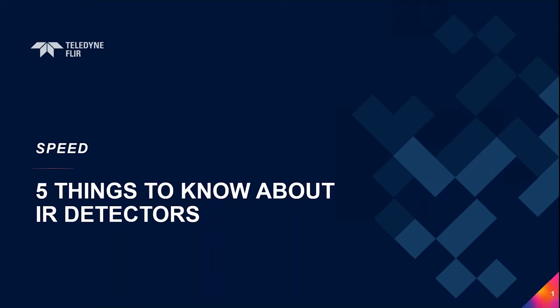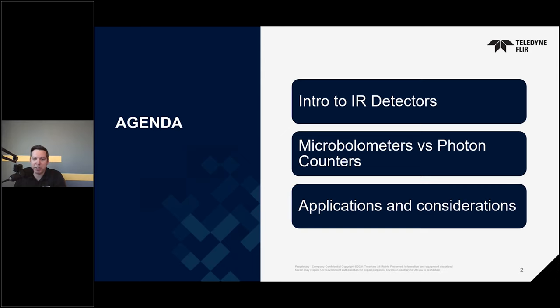Just a brief agenda — trying to keep this presentation as short as possible to keep you engaged. We're only going to be going through a high-level introduction of IR with additional depth specifically on the two primary detector types as they relate to speed on this webinar. To wrap things up, we're going to talk about how the detector differences apply to performance in high-speed applications.